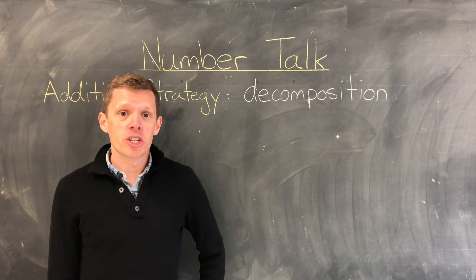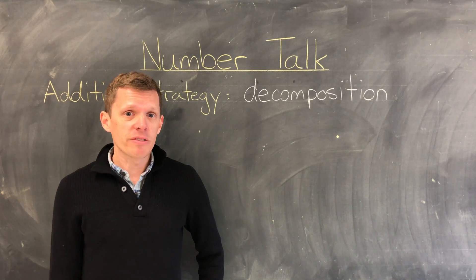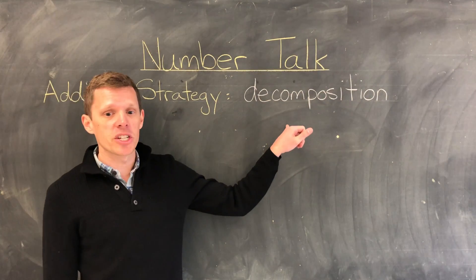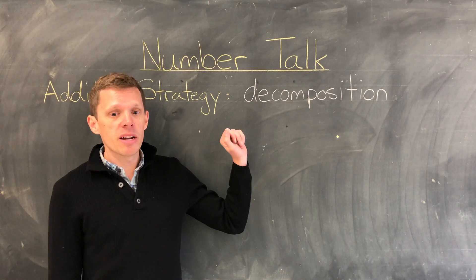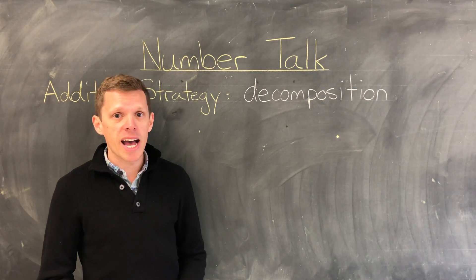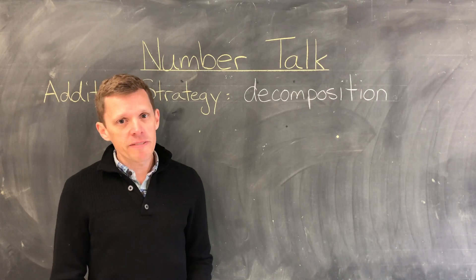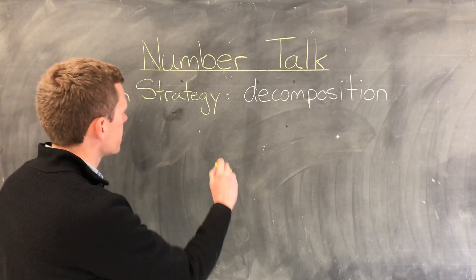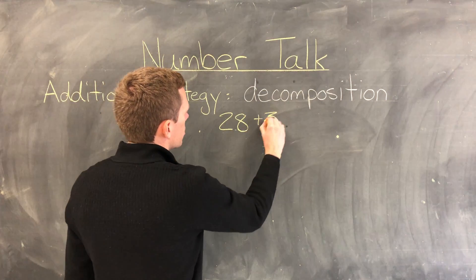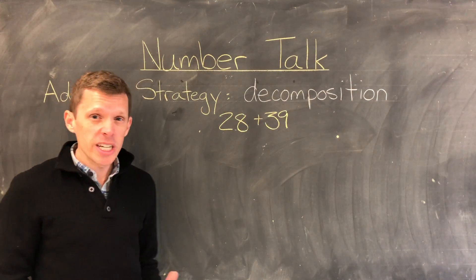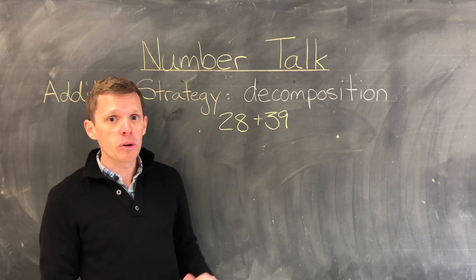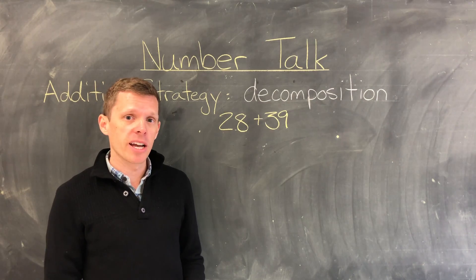Hi everyone and welcome to this short number talk video. In this video we are going to discuss the addition strategy of decomposition. We use decomposition to break numbers down into more manageable or friendly parts that we can then add together. For this example we are adding the numbers 28 and 39, and I'm going to show you three different examples of how we can decompose 28 and/or 39 to make them more manageable and friendly to add together and get a sum.